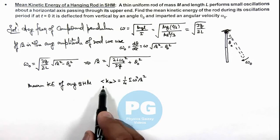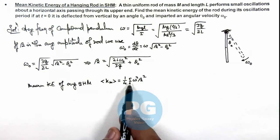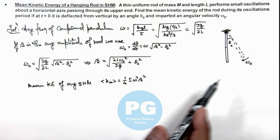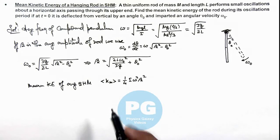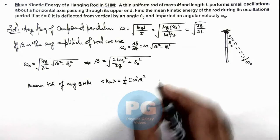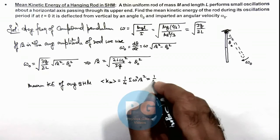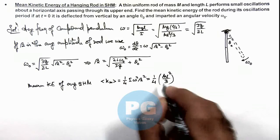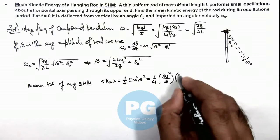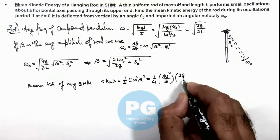So here in angular motion we replace m by I and amplitude A by angular amplitude beta. This we already studied in concept videos, so directly I am using the result. So this is given as one by four, moment of inertia we can write as ML squared by 3, multiplied by omega we can write as 3g by 2L.